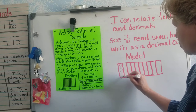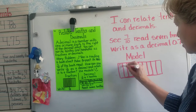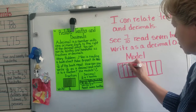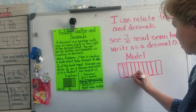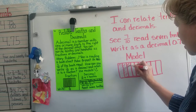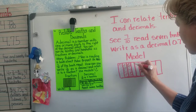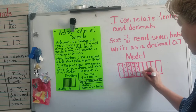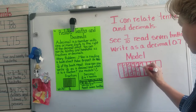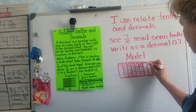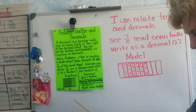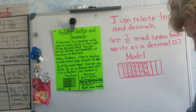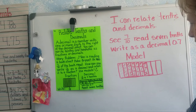So there's one, two, three, four, five, six, seven. Now I have my model of seven tenths.